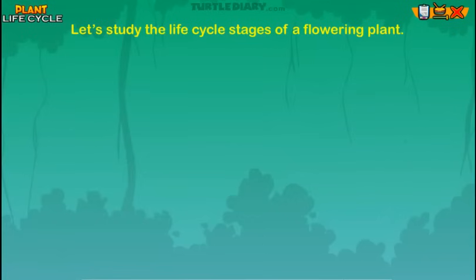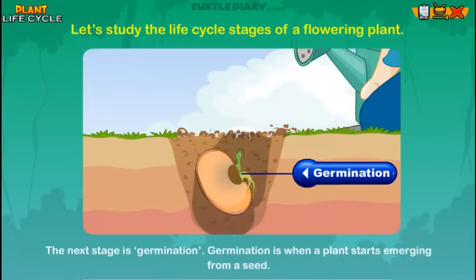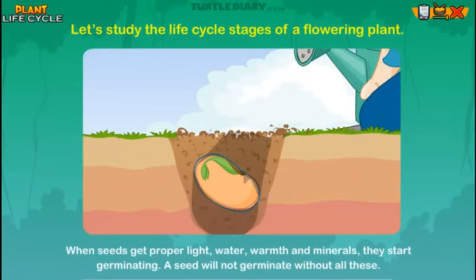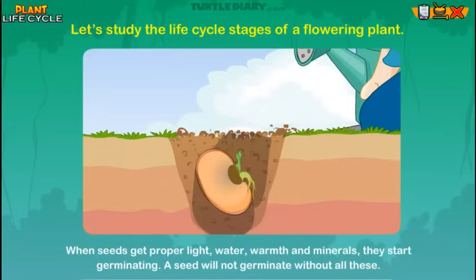The next stage is germination. Germination is when a plant starts emerging from a seed. When seeds get proper light, water, warmth, and minerals, they start germinating. A seed will not germinate without all these.